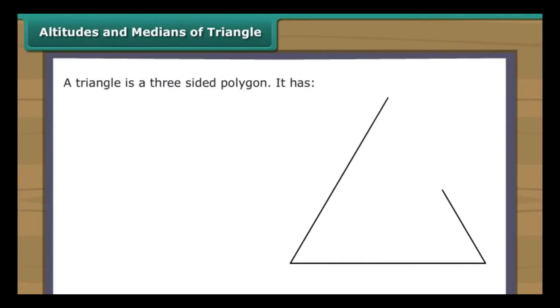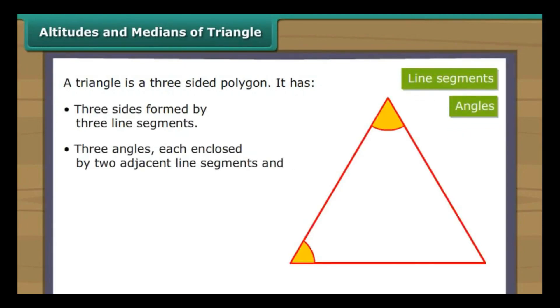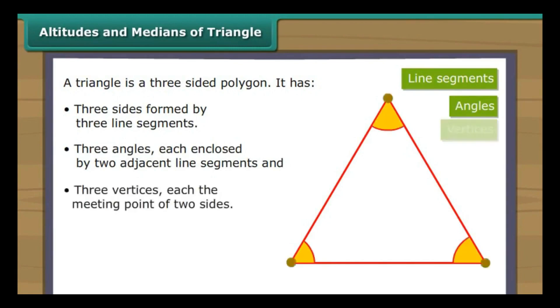A triangle is a three-sided polygon. It has three sides formed by three line segments, three angles each enclosed by two adjacent line segments, and three vertices — each the meeting point of two sides. A triangle also has medians and altitudes.